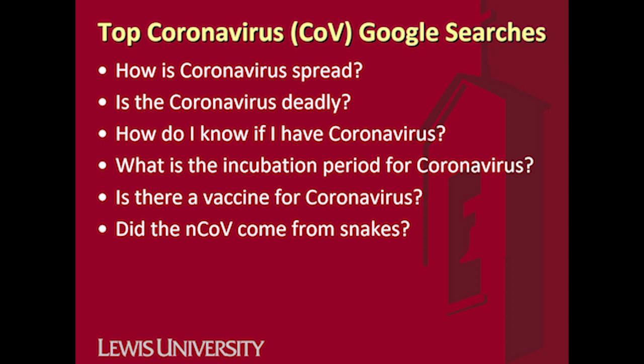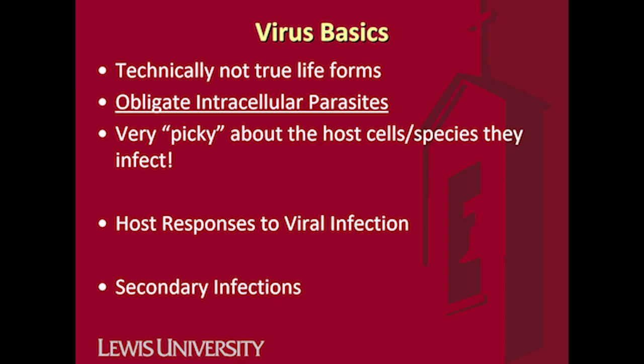Is there a vaccine for coronavirus? Short answer: no, not as of yet. And did the novel coronavirus come from snakes? I saw that question an inordinate number of times. There was apparently snake meat for sale at some common market, and people thought it jumped from snakes to people. The likelihood of that being the case is extremely low. So, some virus basics before we get into the specifics of the novel coronavirus.